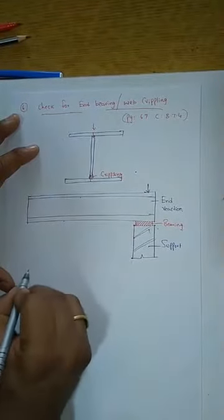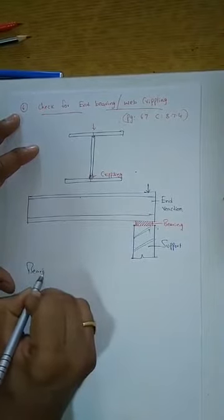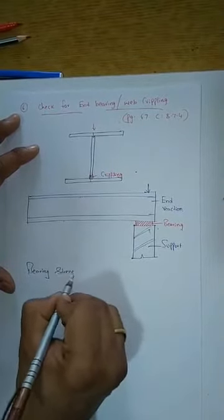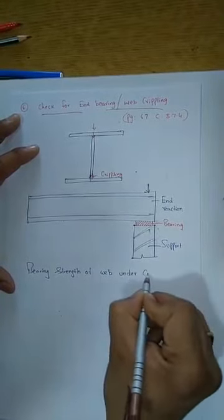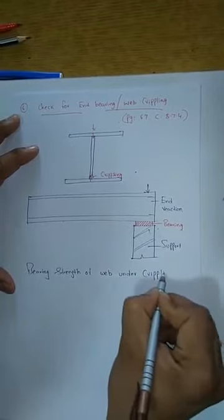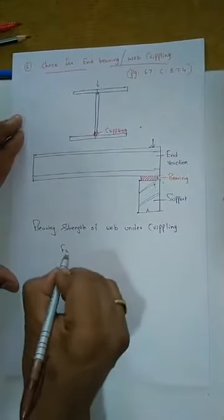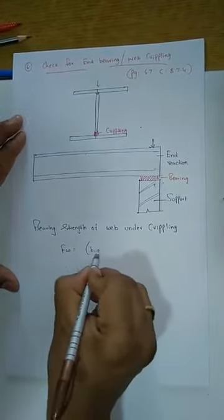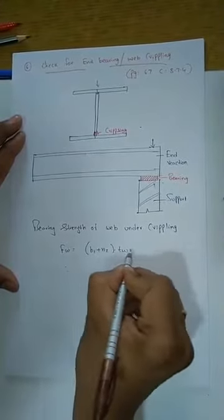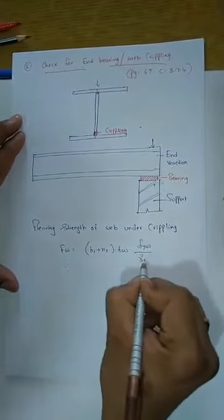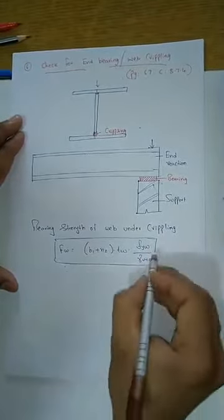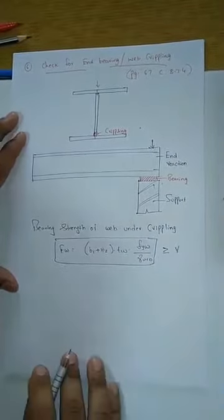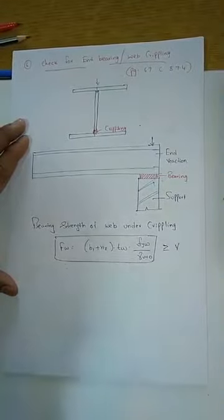What is the formula for bearing strength of the web under crippling? From page number 67, the formula is: Fw = (B1 + N2) × tw × fyw / γm0. This formula calculates the web bearing strength, which should be greater than or equal to the shear force.